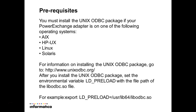On Linux, the prerequisite for using the ODBC DSN is to install the unix ODBC package and also configure the LD_PRELOAD environment variable to the file path of the libodbc.so file. This is a prerequisite from Data Archive in order to use the JDBC ODBC bridge.